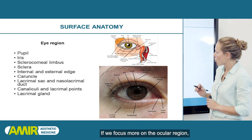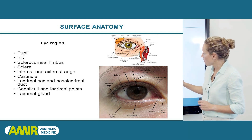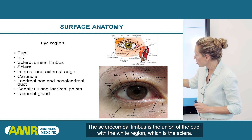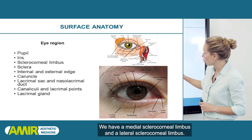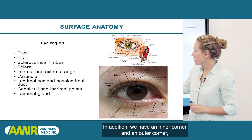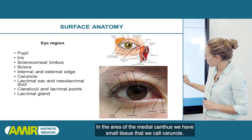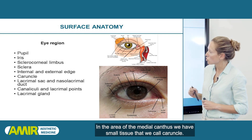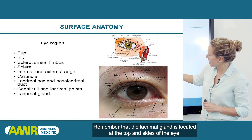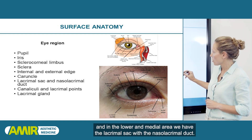If we focus more on the ocular region, it is important that you know — or recall — what is the pupil, the iris, and the sclerocorneal limbus. The sclerocorneal limbus is the union of the pupil with the white region, which is the sclera. We have a medial sclerocorneal limbus and a lateral sclerocorneal limbus. In addition, we have an inner corner and an outer corner, one upper eyelid and one lower eyelid with eyelashes. In the area of the medial canthus, we have small tissue called the caruncle. The lacrimal gland is located at the top and sides of the eye, and in the lower medial area we have the lacrimal sac with the nasal lacrimal duct.